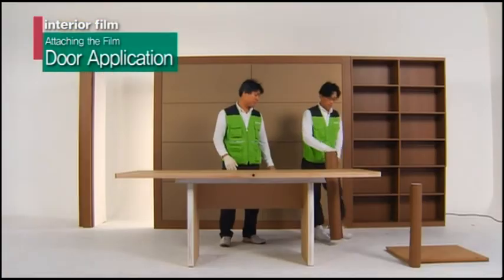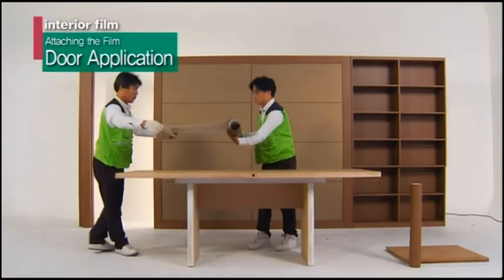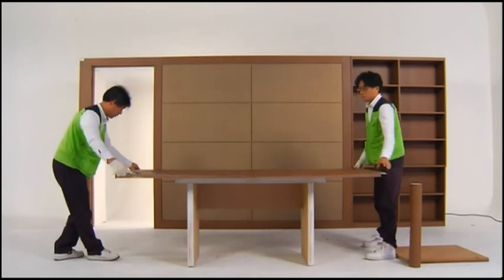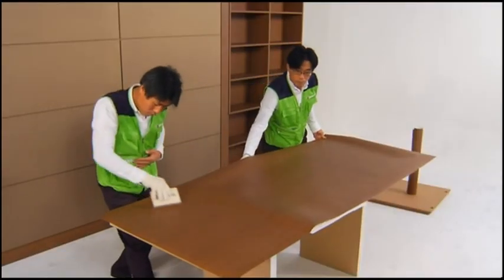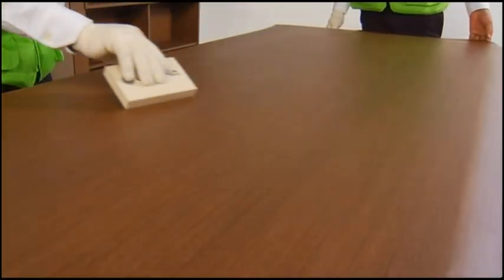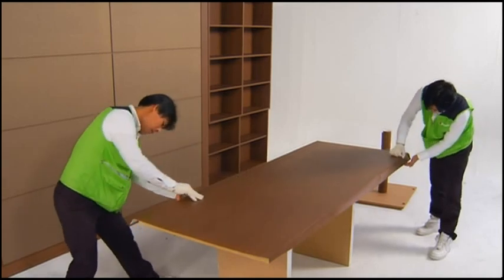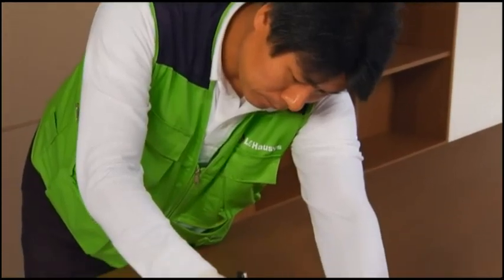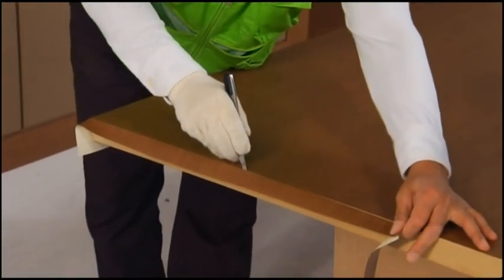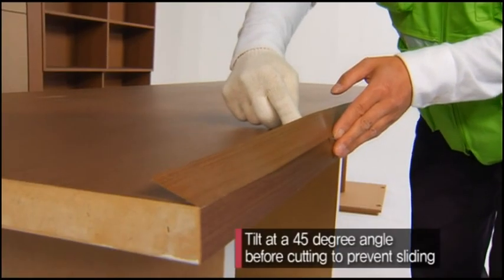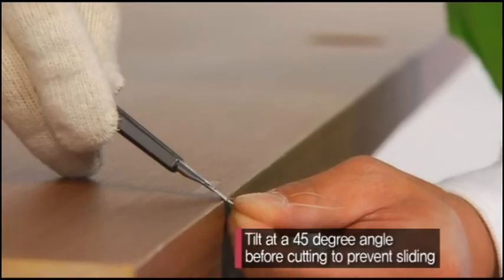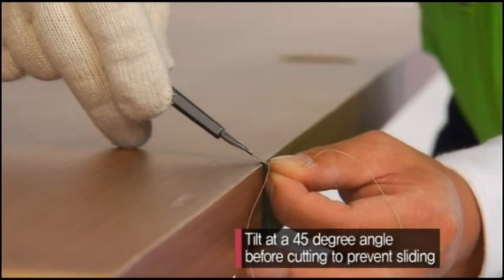The procedure for doors is similar to wall surfaces and you can use this same general method as well. When working on doors, tilting it at a 45 degree angle before cutting prevents the door from sliding and the film from lifting.